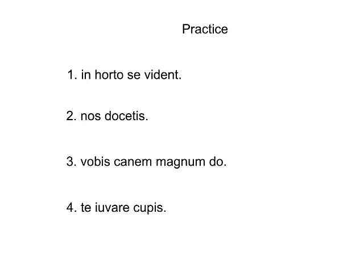Alright, let's bracket, label, and translate all this. First sentence: 'in horto' is a prepositional phrase, 'vident' is the verb, 'se' is the direct object. And 'se' is always reflexive, so this is reflexive.